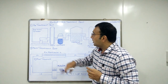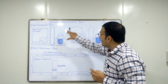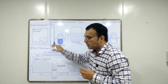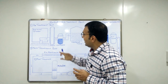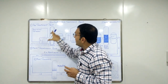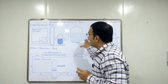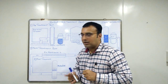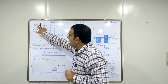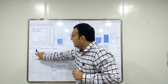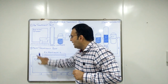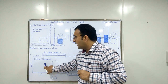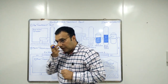Now we will get detailed information about all these units and their functions. This purified water system is divided into three parts: first is pre-treatment, second is main treatment, and third is post-treatment, which we also call water polishing.